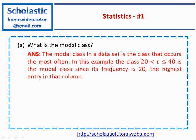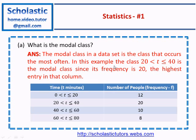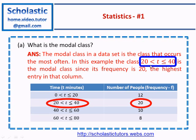In this example, if you look at the frequency distribution, we can see frequency 20 here is the most frequent class. Therefore, the time between 20 and 40 is the modal class. The modal class's frequency is 20, the highest entry in this column.